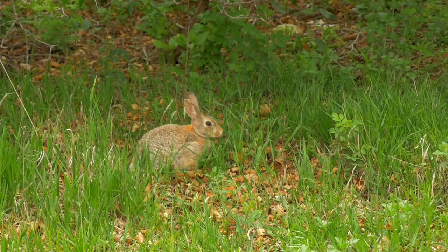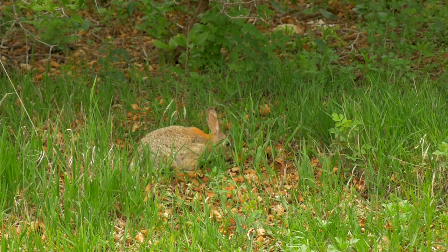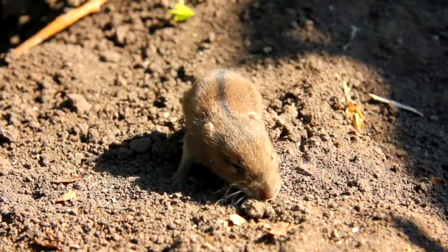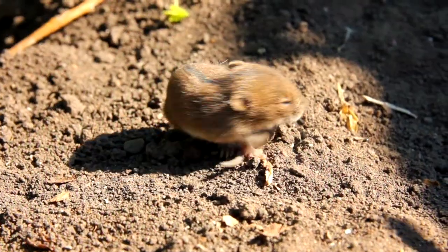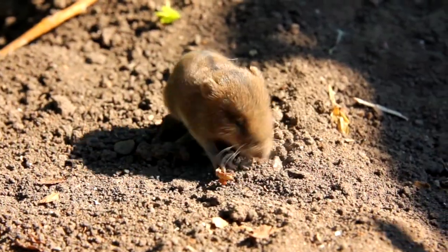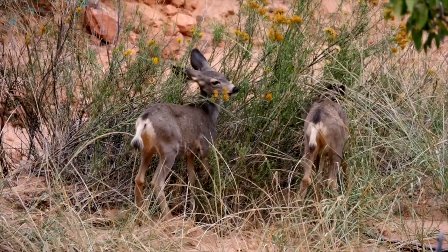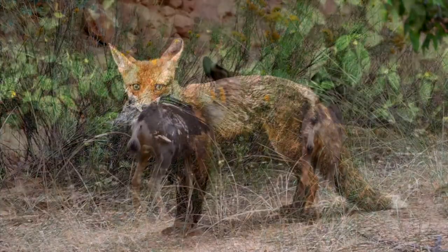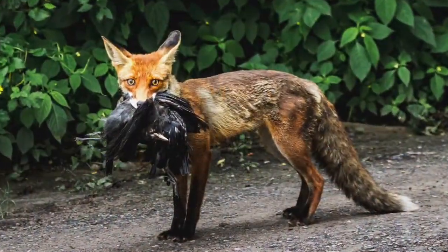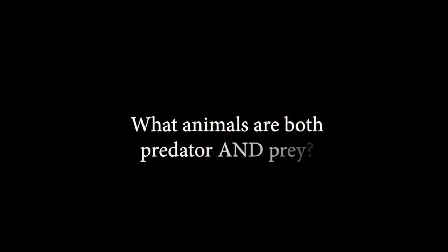Prey are the animals hunted and eaten by the predators. They are most often herbivores and tend to be smaller. Examples of prey are mice, rats, rabbits, deer, and birds. Some animals are both predators and prey.